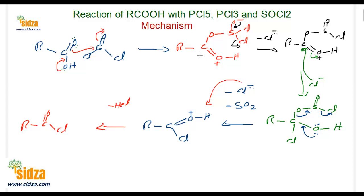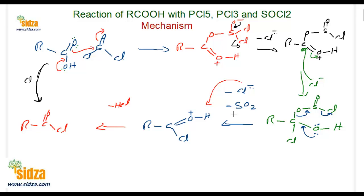Looking at the overall reaction: the starting compound is the carboxylic acid and the final product is the acid chloride. The change is that OH has been replaced by Cl — one of the chlorines from SOCl₂ replaces the OH from the carboxylic acid, giving the acid derivative RCOCl. Hope you got the concept — thanks for watching the video, bye for now.